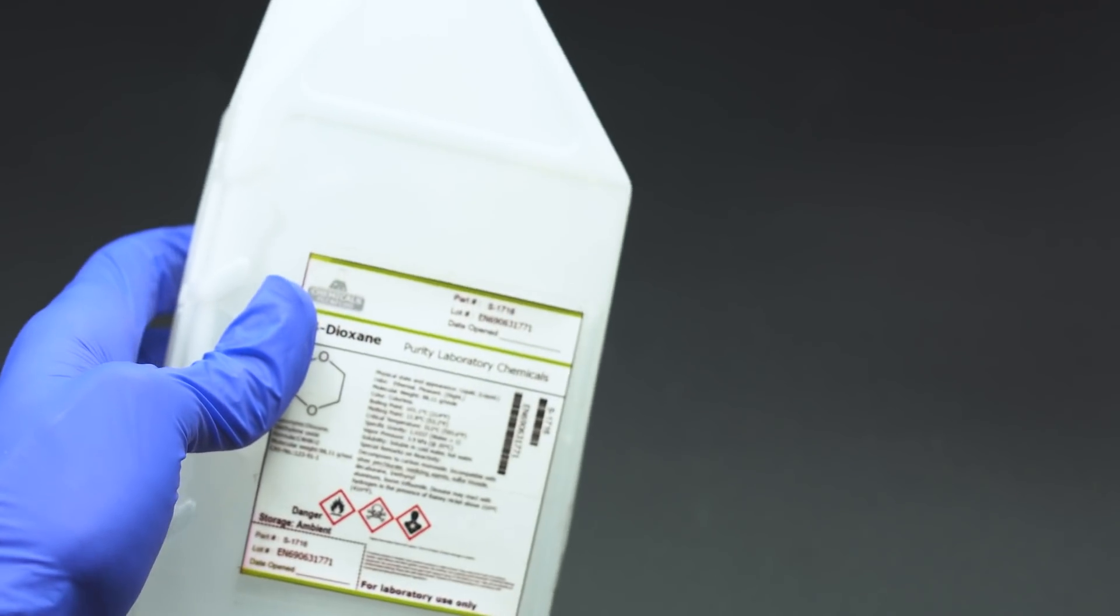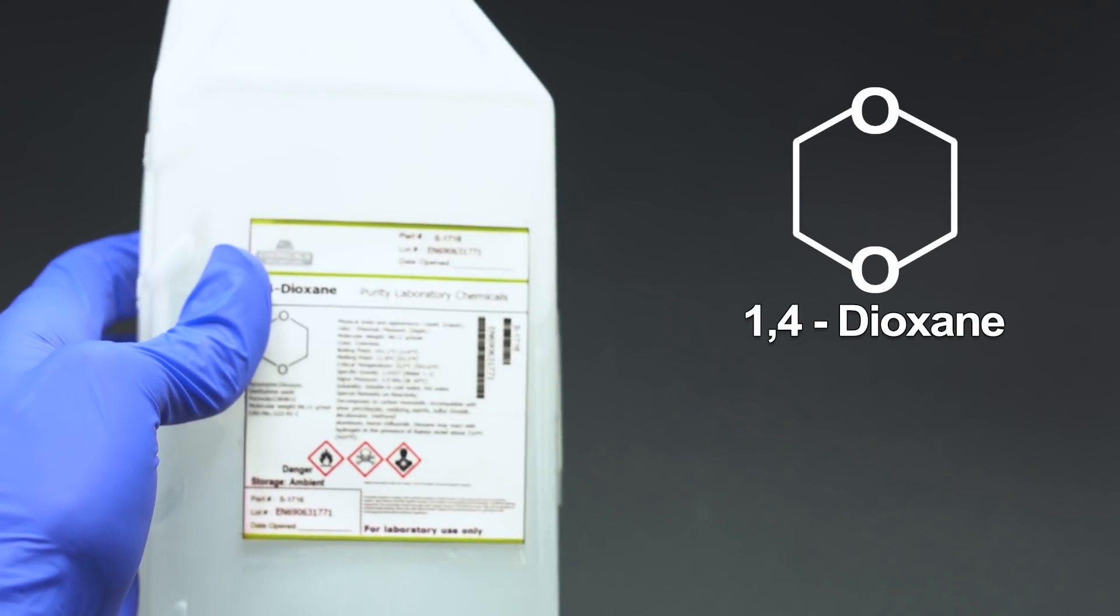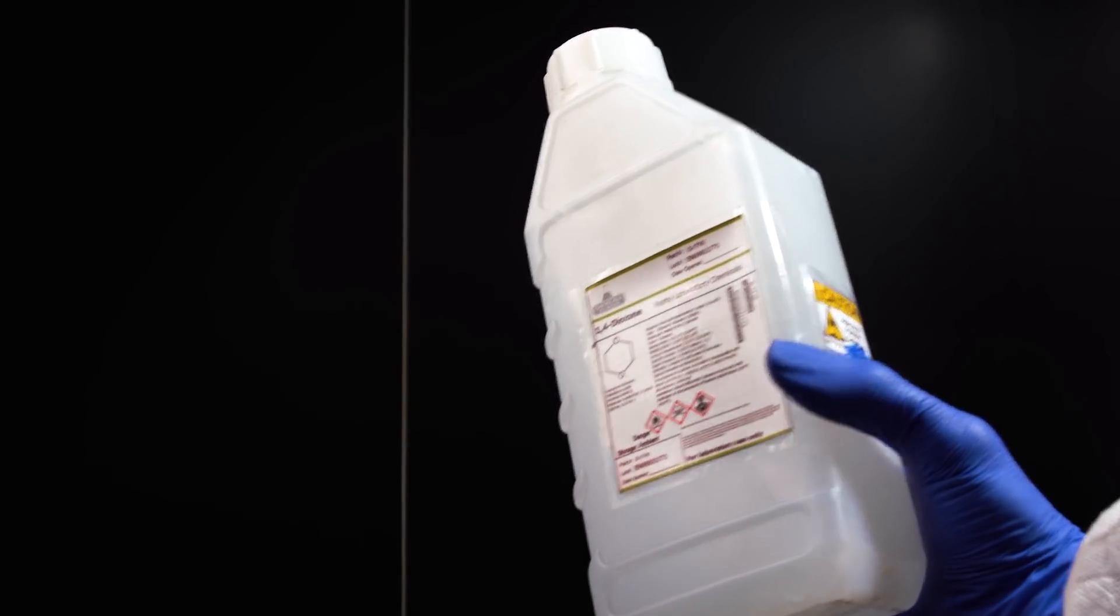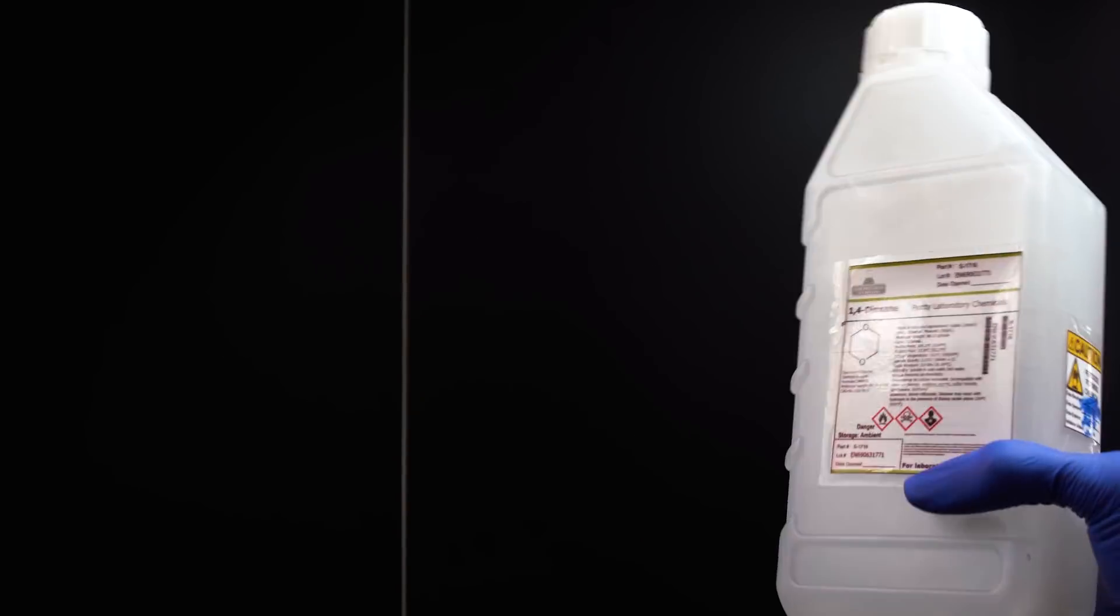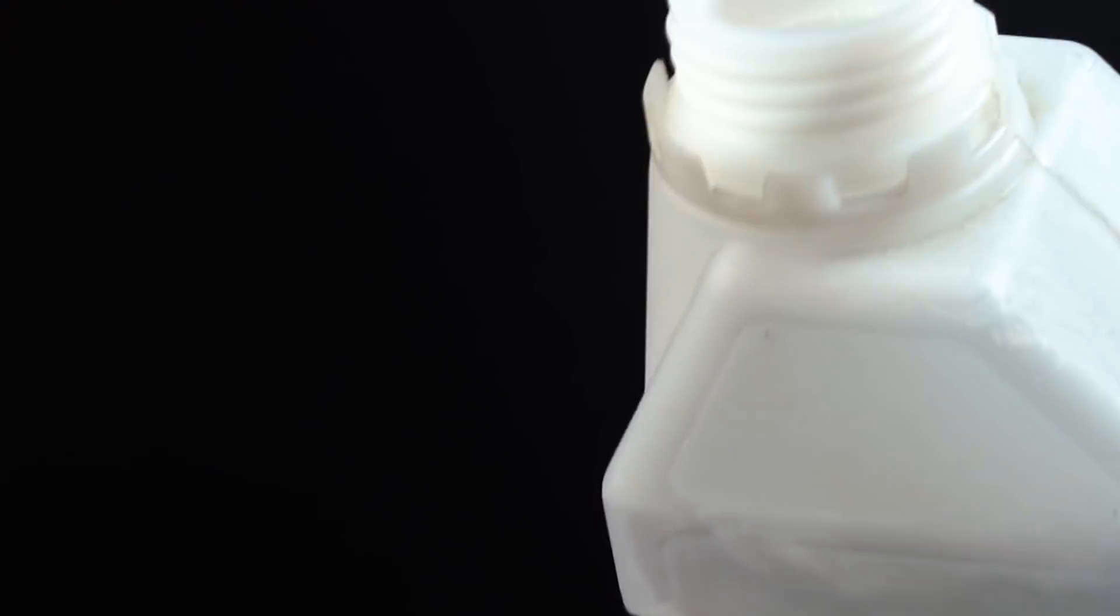So our first component is dioxane. It's a cyclic ether that is widely used as a solvent in laboratory practice. Dioxane is usually stored at room temperature because it starts to freeze up at temperatures below 12 degrees Celsius, which makes it difficult to use afterwards.